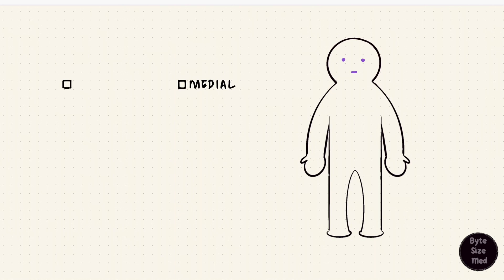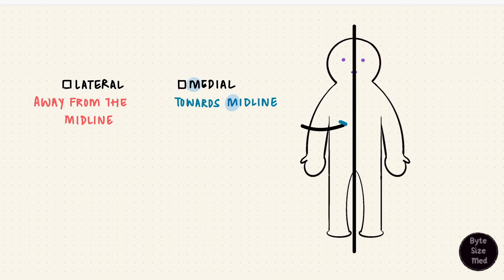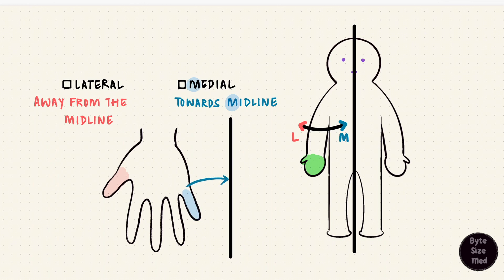Medial and lateral. This is a little more challenging than the previous two sets, but medial is towards the midline. Lateral is away from the midline. Structures closer to the midline would be medial to the structures that are farther away from it. Let's look at the relationship between the thumb and the little finger. In the anatomical position, the palms face forward. The little finger is closer to the midline, so the little finger is medial to the thumb, and the thumb is lateral to the little finger.